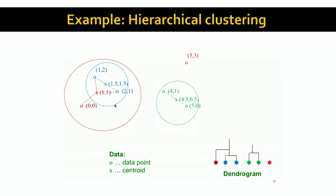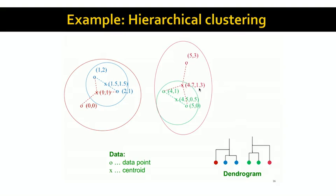Now we have three clusters: one with centroid (1,1), another with centroid (5,3), and a third with centroid (4.5, 0.5). When we measure the inter-cluster distances between these three centroids, we determine that the two closest are (5,3) and (4.5, 0.5). We combine those, and that new cluster has centroid (4.7, 1.3). Now we are reduced to two clusters. We can either stop at this point and output these two clusters, or decide to merge them further and create a single large cluster. Even if we do merge them, the dendrogram shows the order in which these merges happen and contains very useful information — for example, if the data points represent species of different animals, the dendrogram represents a family tree of how those species evolved.